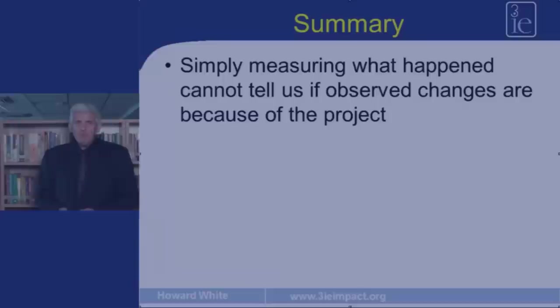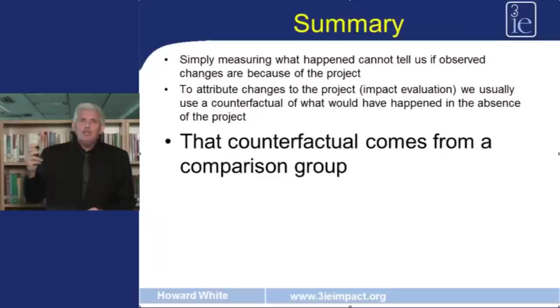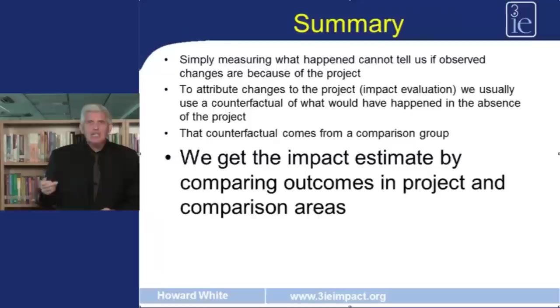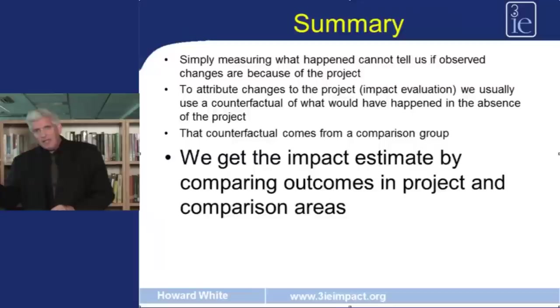In summary, simply looking at what happens in project areas cannot tell us that observed changes are a result of the project. We need impact evaluation to tell us what would have happened in the absence of the project, and we usually do that using a comparison group. Once we have a comparison group, we can compare outcomes in project areas with outcomes in comparison areas to measure the difference the programme made — so we can design better programmes in the future and spend money on programmes that are more effective. Please go on and take the quiz associated with this lecture. Thank you.